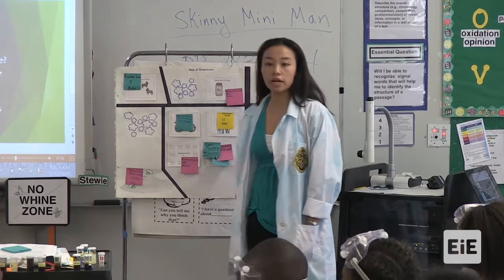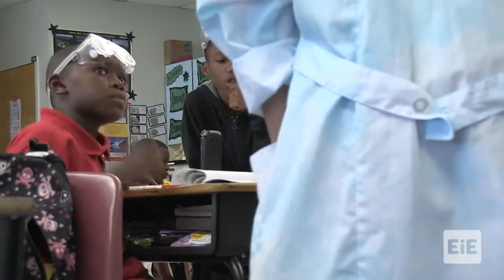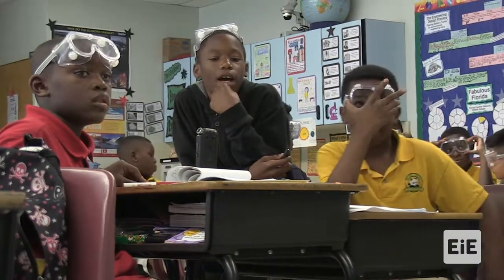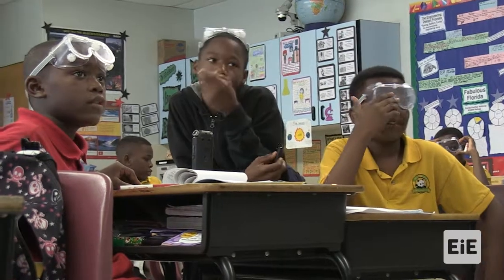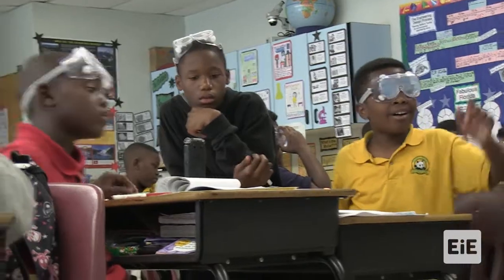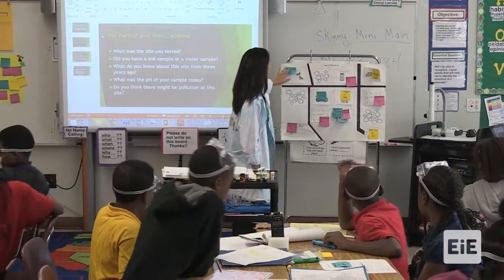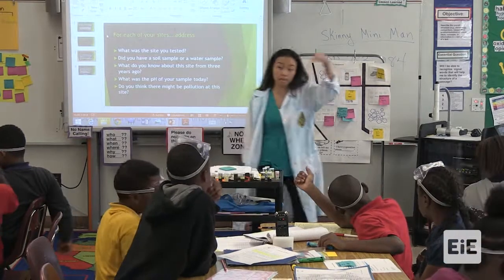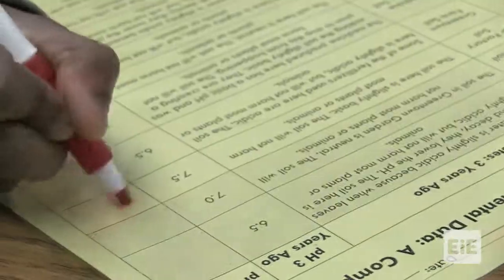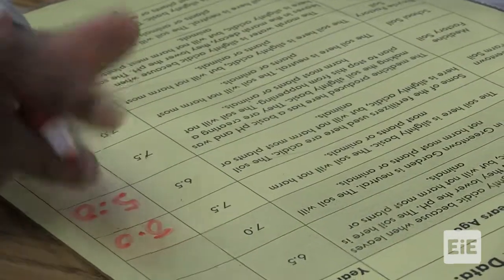Let's start with the Greentown Farm. Raise your hand if you had Greentown Farm. What was it three years ago? 6.5. And what was your sample today? 5.0. So everybody should be recording on your yellow sheet. For Greentown Farm, today's present sample is a 5.0. You can go ahead and write 5.0 for that.